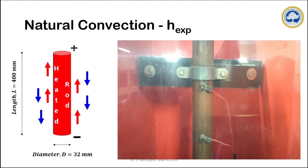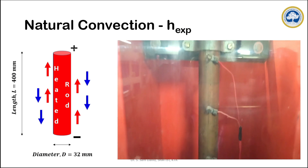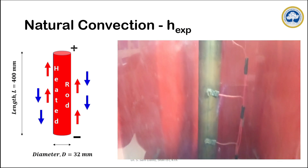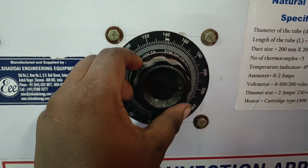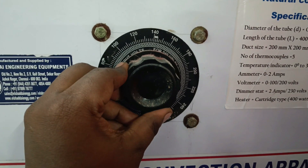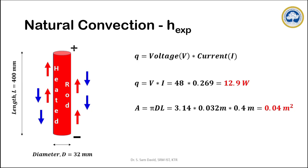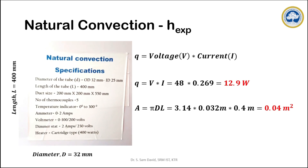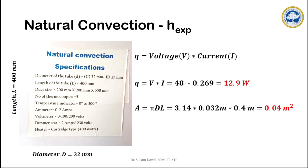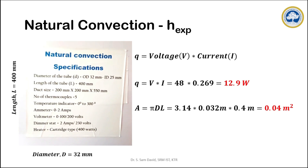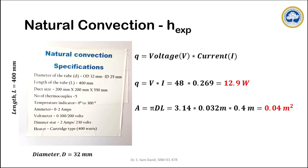The heater rod inside the chamber has a length of 400 mm and a diameter of 32 mm. The power input to the metal rod is controlled by adjusting the voltage and current — the product of voltage and current gives us the power input. Using the diameter and length of the heater rod, we can calculate the surface area available for heat transfer.